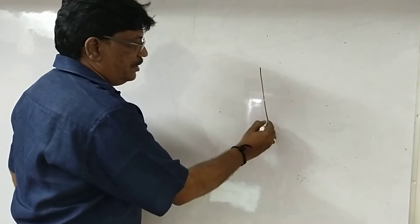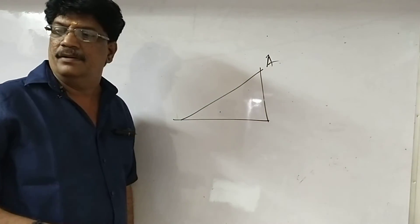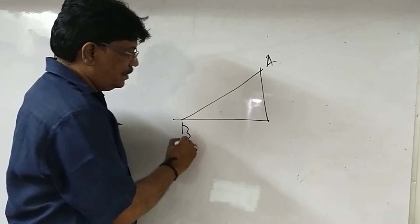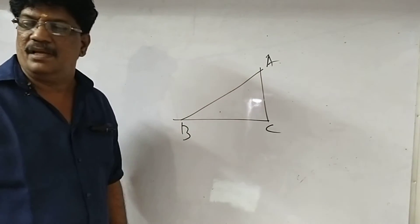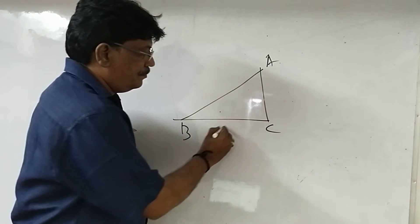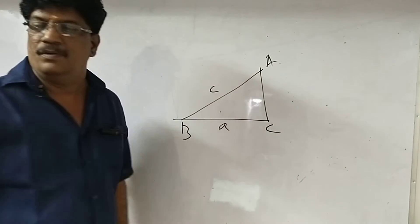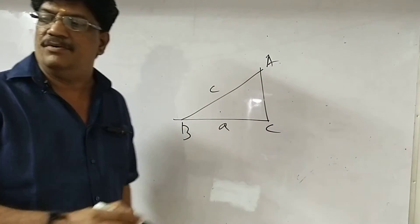Sixth sum. Triangle given with points A, B, C, and then corresponding small letters: small a, small c, and small b.